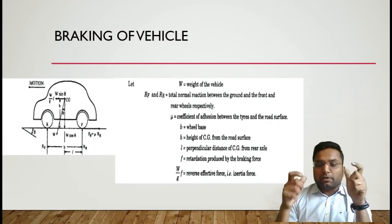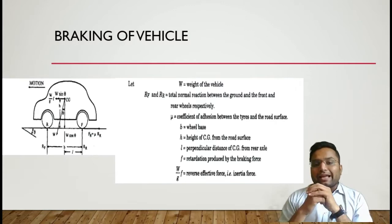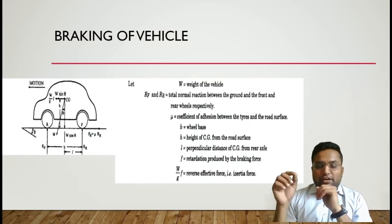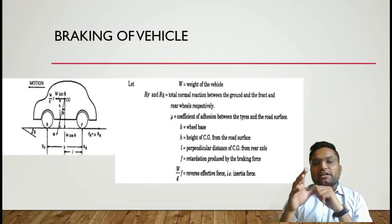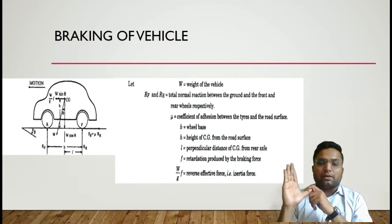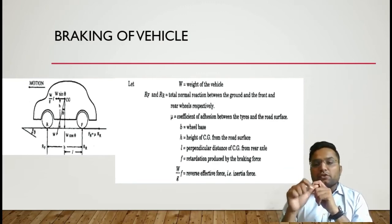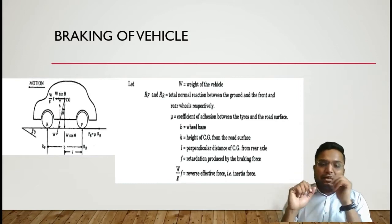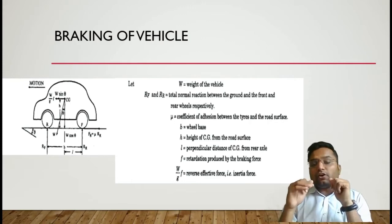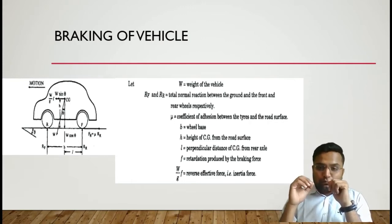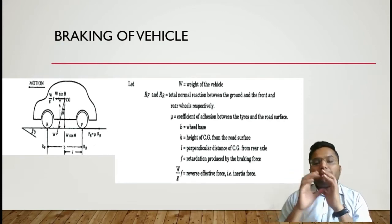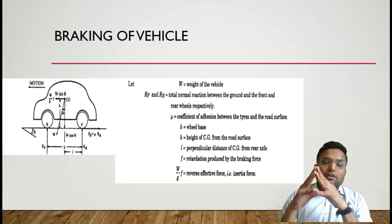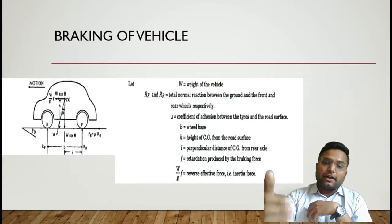The car is moving at an angle theta, where its weight acts through the center of gravity with two components: the vertical component W cos theta and the horizontal component W sin theta. The inertia force is W/G times F, acting in reverse. B is the wheelbase, H is the height of CG from the ground, and L is the perpendicular distance of the CG from the rear axle.